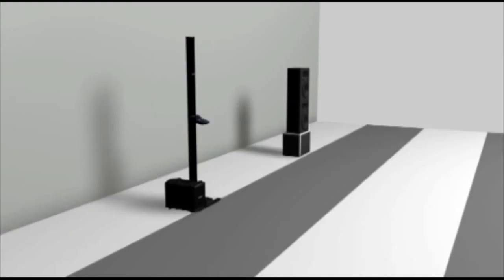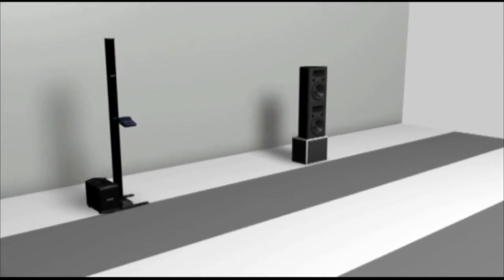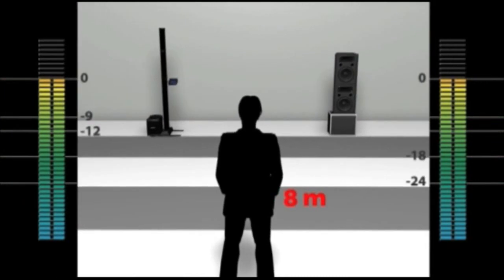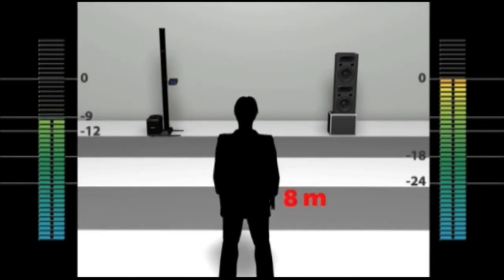The L1 keeps its sound level over a much longer distance than traditional loudspeakers. For instance, at a distance of 8 meters from the source, the L1 will lose only 9 dB of sound, while the conventional loudspeaker will lose 18 dB.